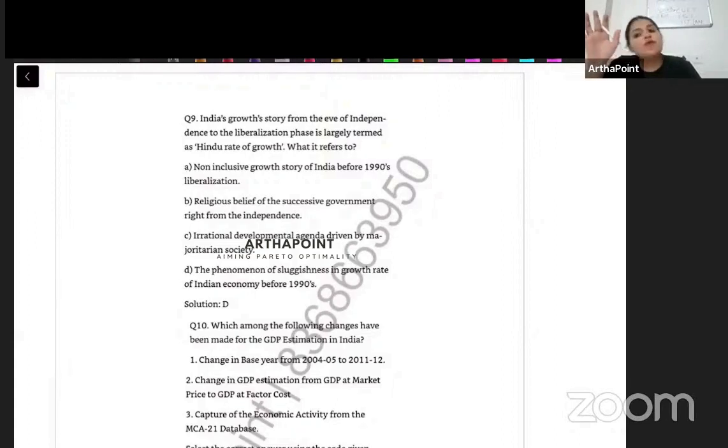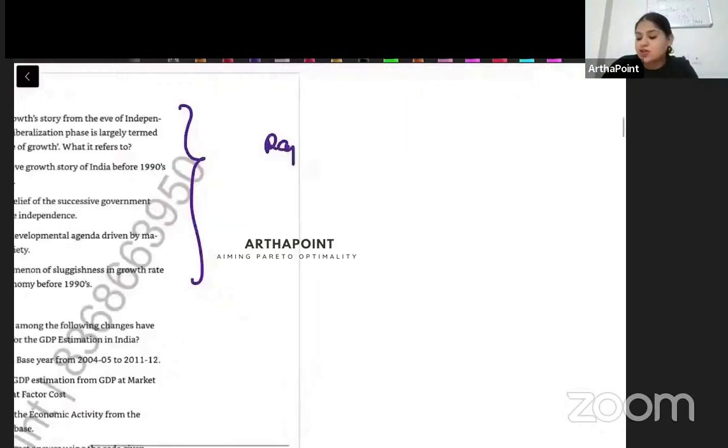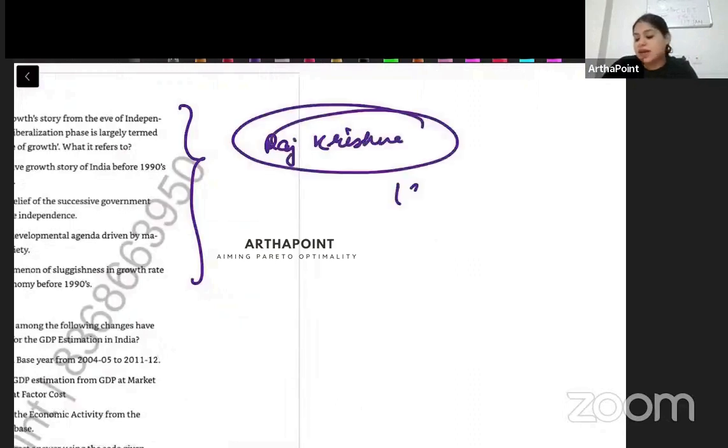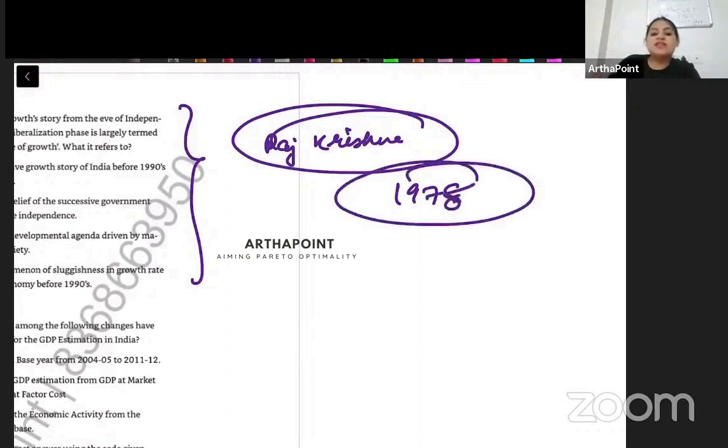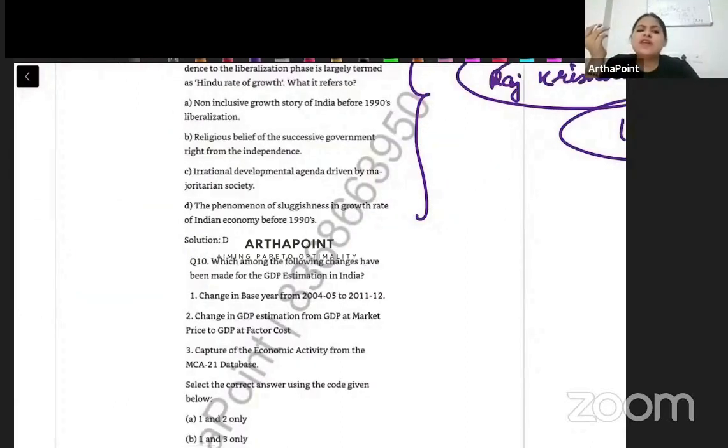So the sluggishness - we are not able to grow at a good growth rate - that basically is called Hindu rate of growth. Exact rate was on average 4%. So between the period, not till 1990s, between the period 1950s to 1980s, we on average grew at 4% and the liberalists at that time coined this term. In particular, this term was coined by Raj Krishna. He gave this term in 1978 and he said that this is an annual rate of growth which is very, very low.